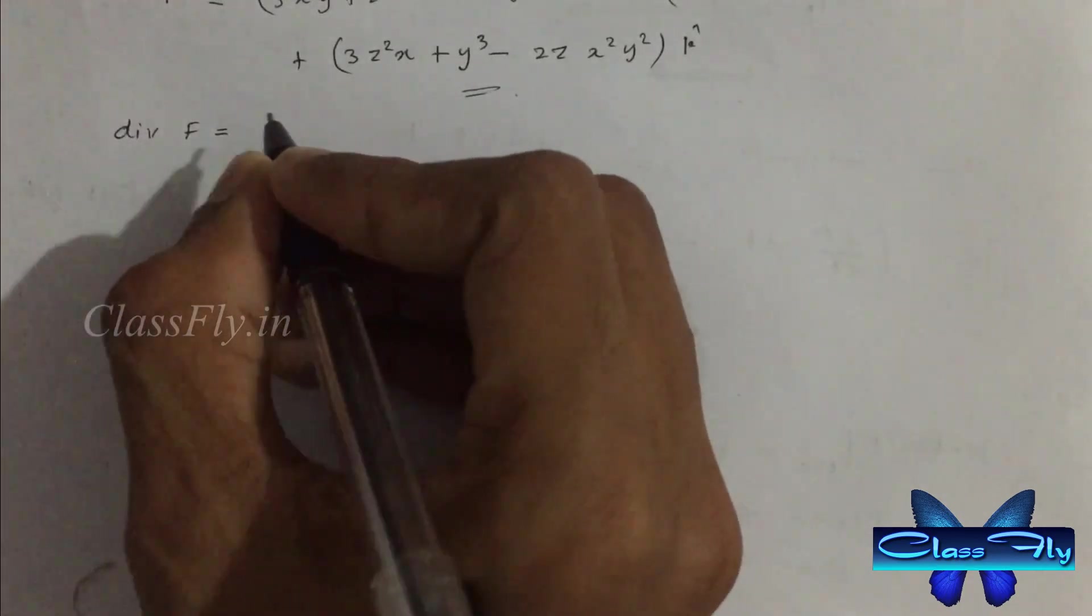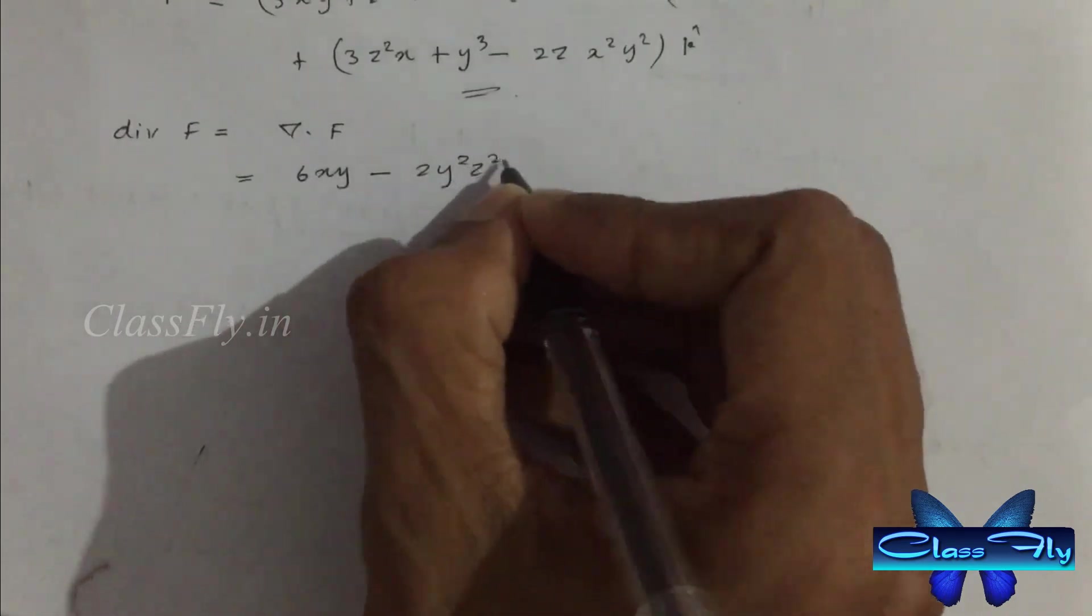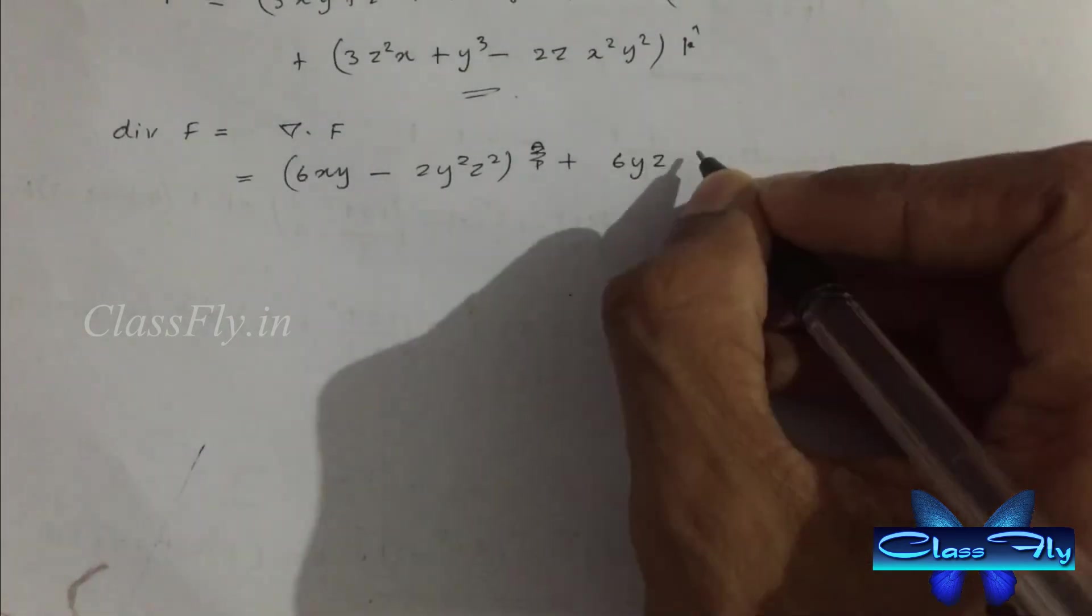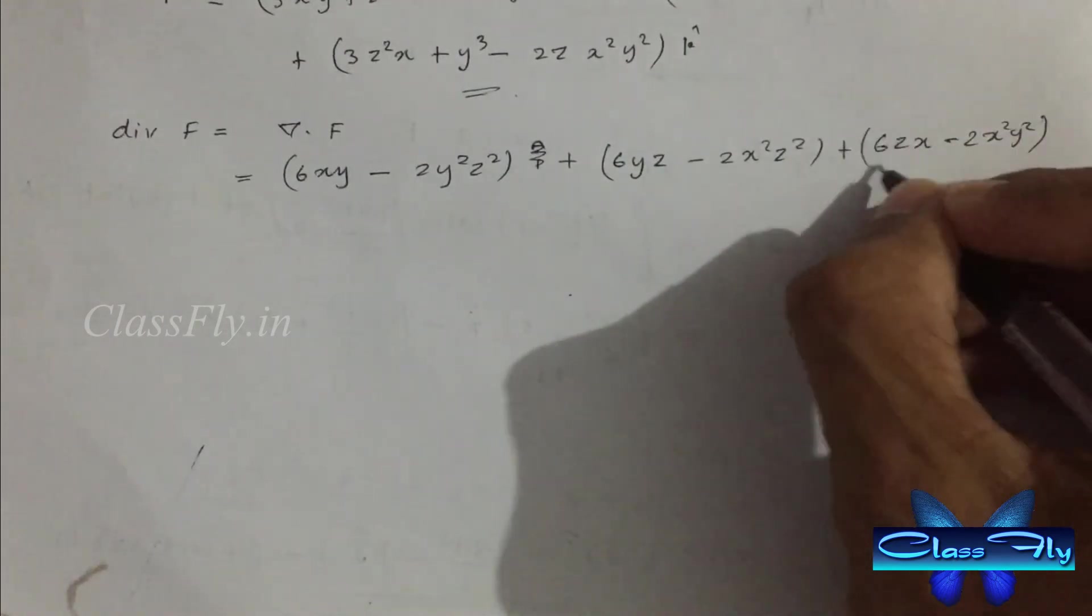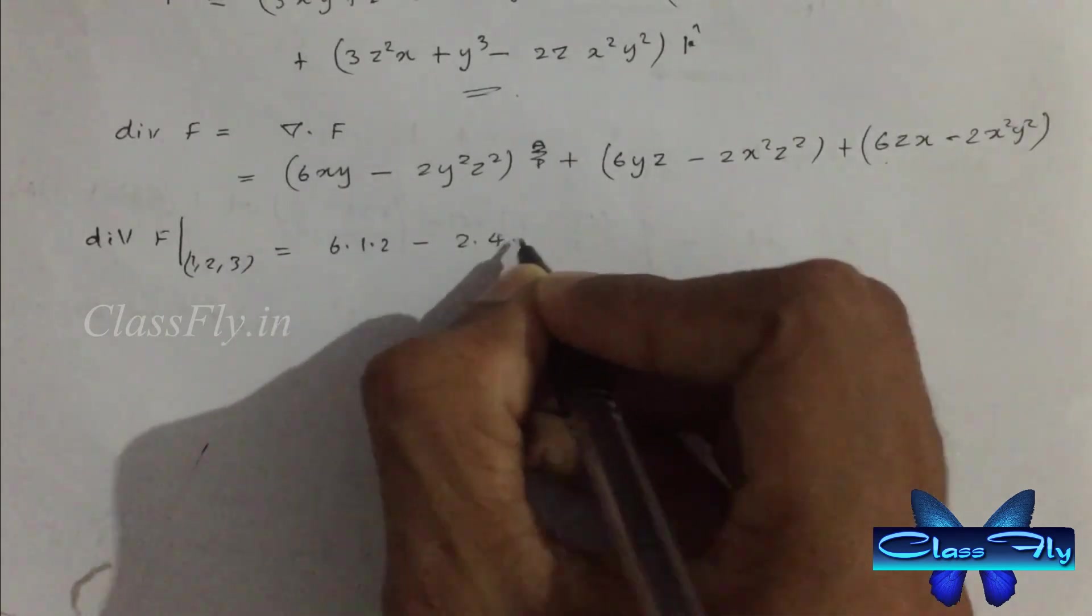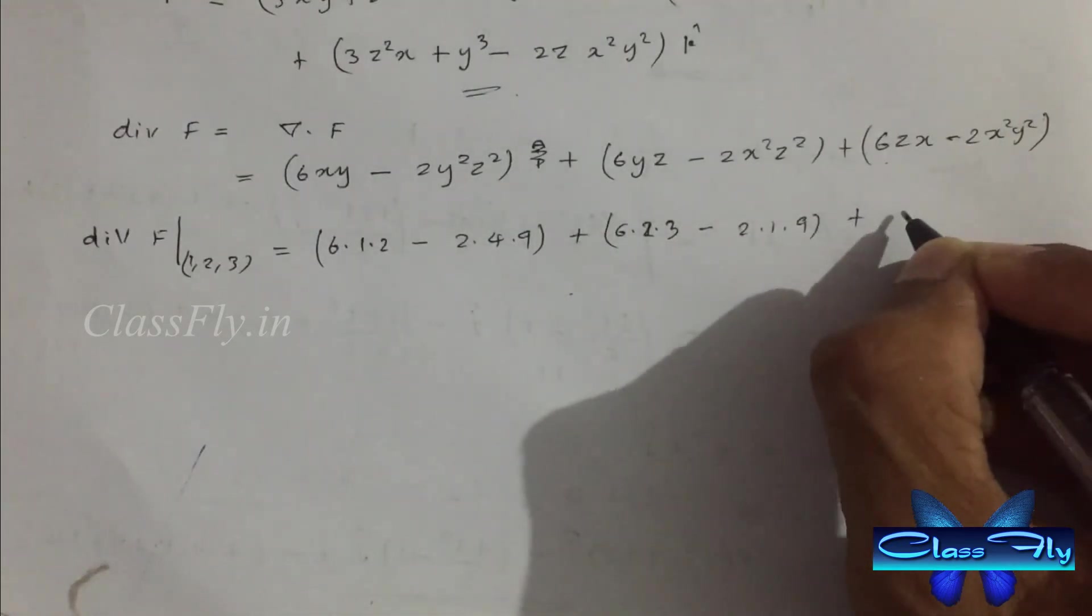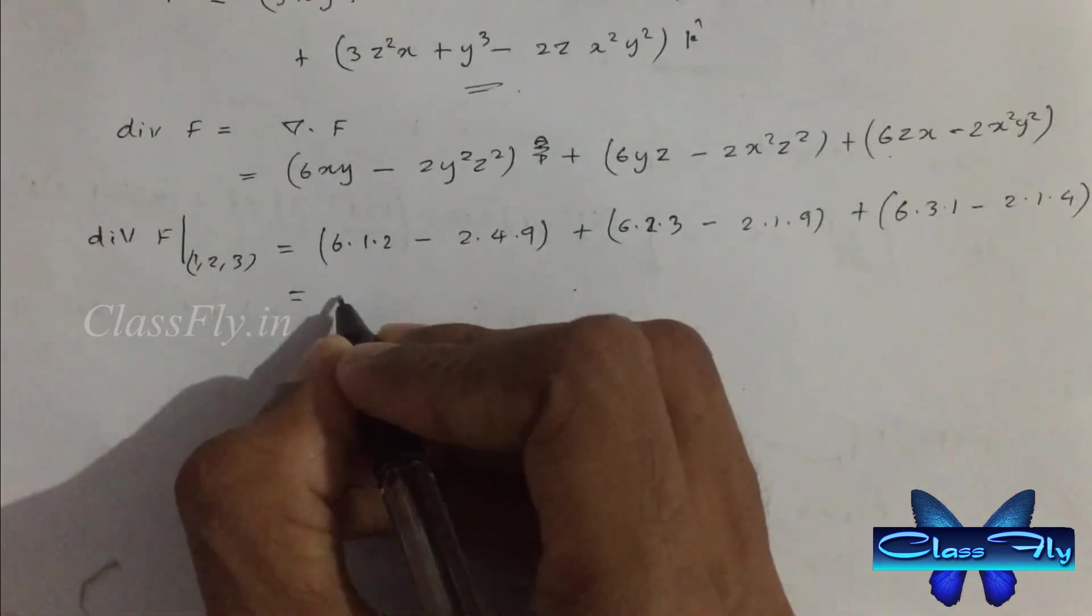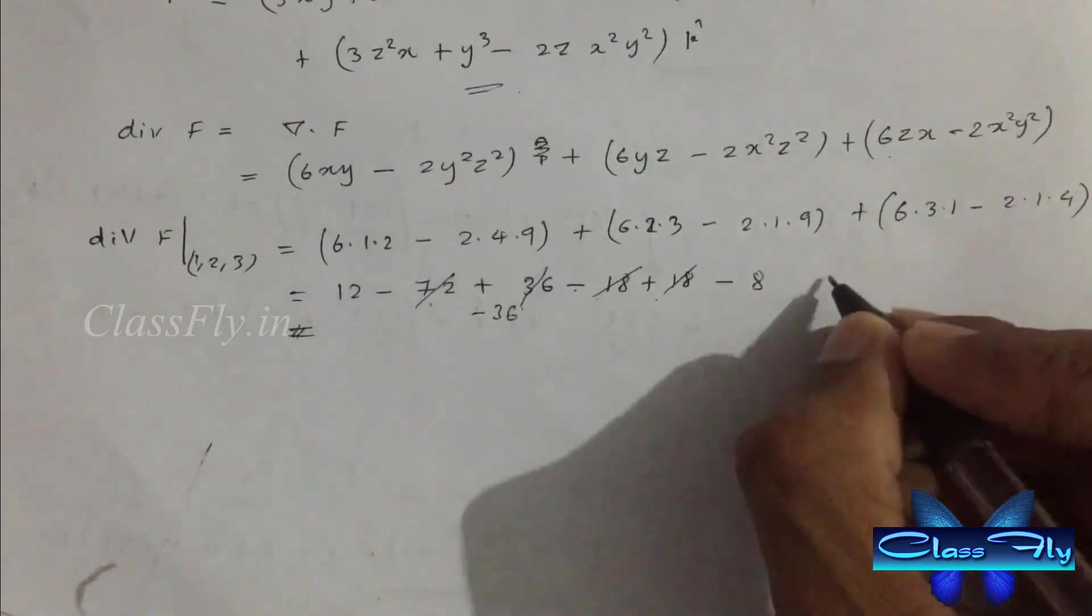Now we have to take the del dot F for divergence which is equal to 6xy minus 2y square z square plus 6yz minus 2x square z square plus 6zx minus 2x square y square. Now we have to substitute the point (1, 2, 3) which gives us divergence F equals minus 32.